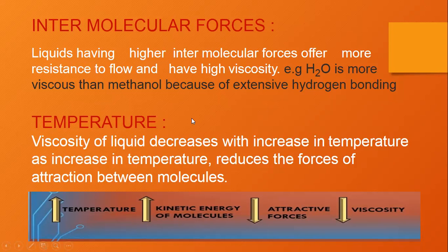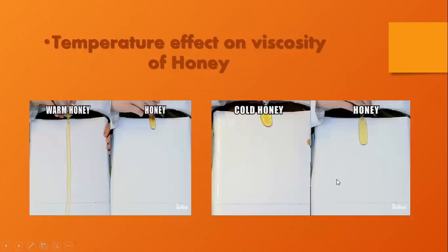The next factor is temperature. Viscosity of a liquid decreases with increase of temperature. When temperature increases, kinetic energy of molecules also increases, so molecules move at very high speed. Because of high kinetic energy, attractive forces among molecules decrease. As attractive forces decrease, molecules move at high speed — that is, their viscosity decreases, and vice versa. For example, warm honey flows at a higher rate than honey at normal room temperature, while cold honey from the refrigerator flows at very low speed.